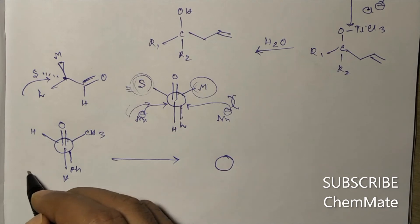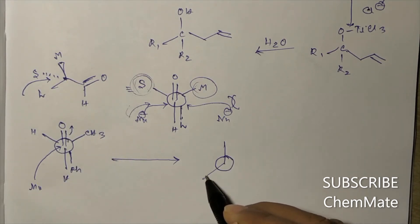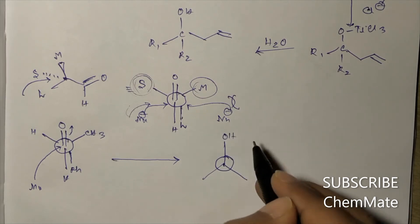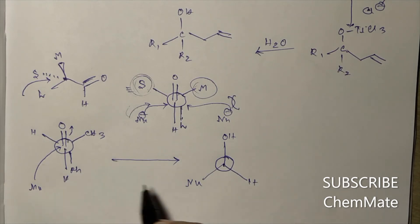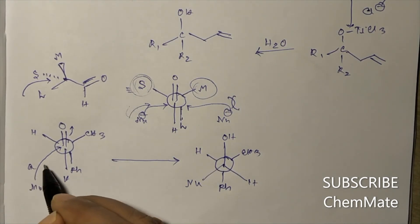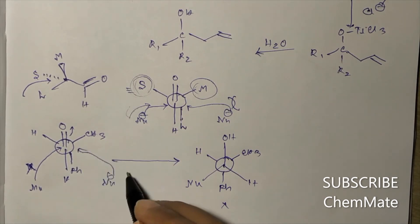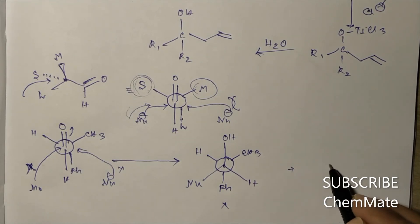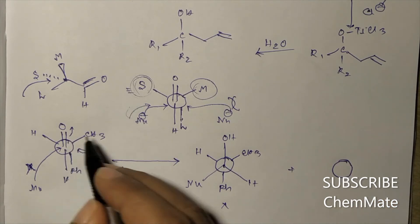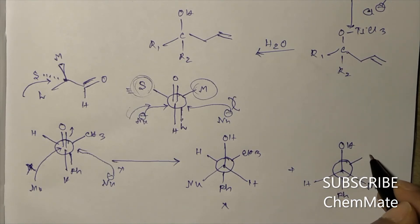If the nucleophile attacks from the hydrogen side, the OH will be on one face and the nucleophile (allyl group) will be attached accordingly, with the phenyl and CH₃ in their respective positions — this is product X. If the nucleophile attacks from the other side, the OH will be on the opposite face — this is product Y, with the R groups remaining as usual.